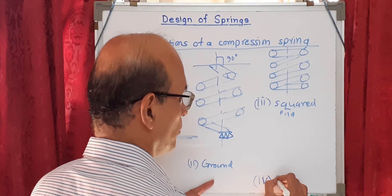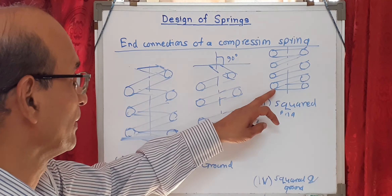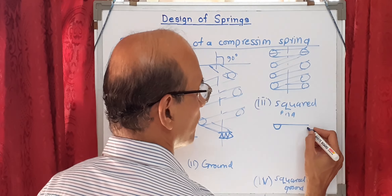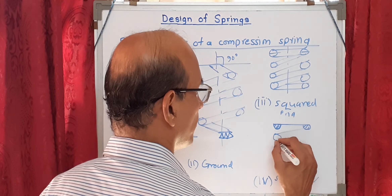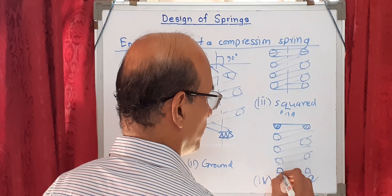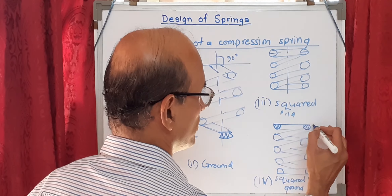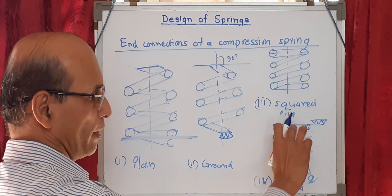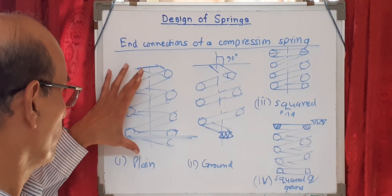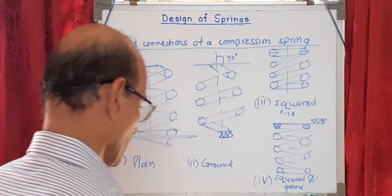The fourth type is a combination: squared and ground. The end is first squared (bent to be horizontal) and then ground, so the wire diameter becomes effectively half at the end. These are the four different types of ends for a helical compression spring: plain end, ground end, squared end, and squared-and-ground end.